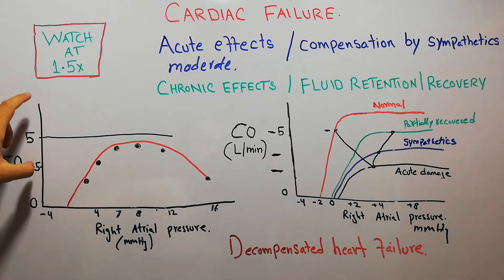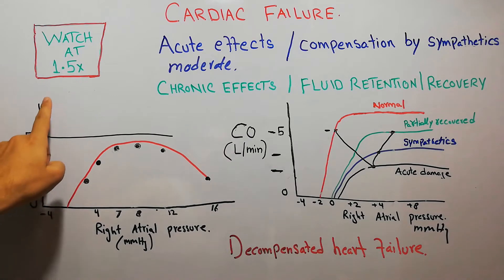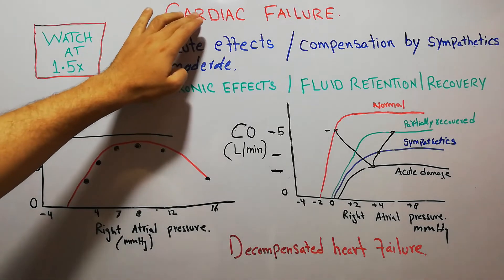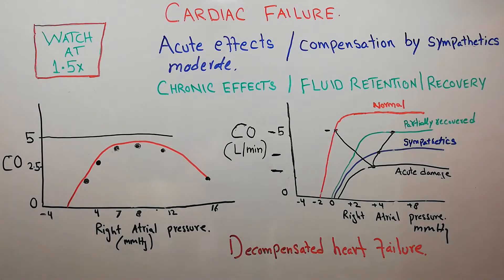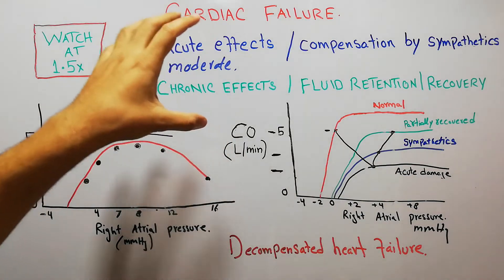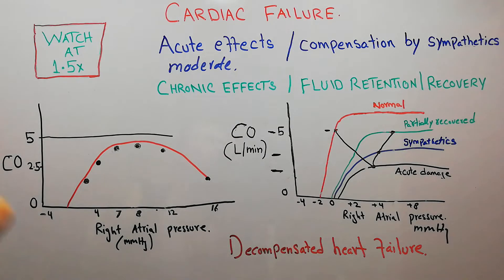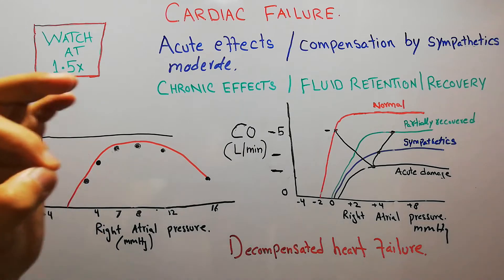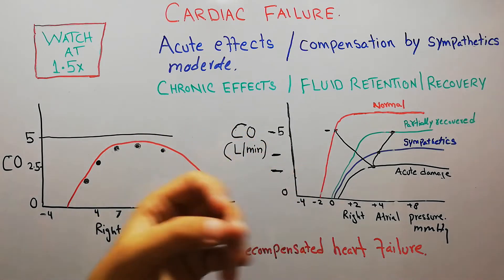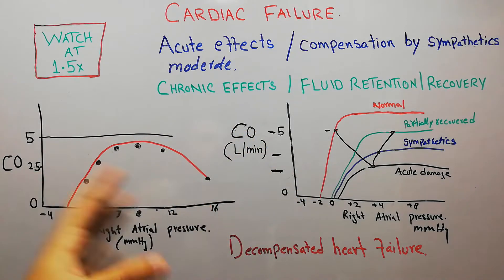Both graphs have cardiac output on the y-axis, which is 5 liters per minute in the normal heart. There are many causes of cardiac failure, but the most important cause is ischemic heart disease, when blood vessels supplying blood to the heart muscles get blocked or blood flow decreases. Most ischemic heart disease is due to atherosclerosis or obstruction in the coronary vessels, which supply blood to the heart muscles.